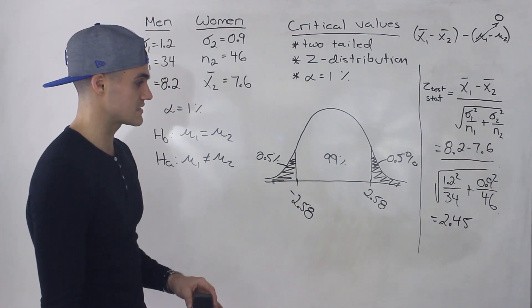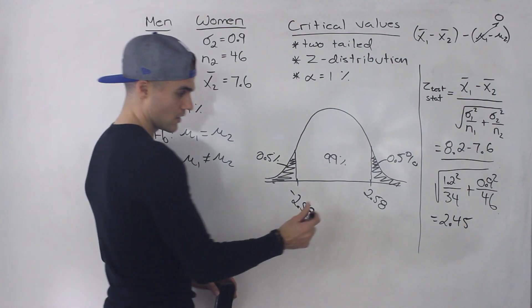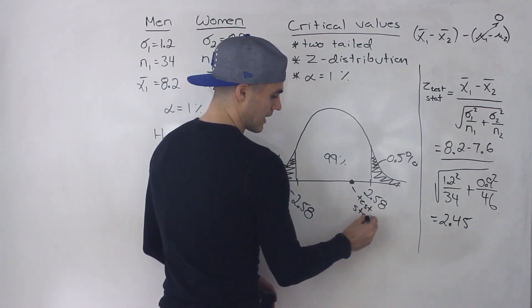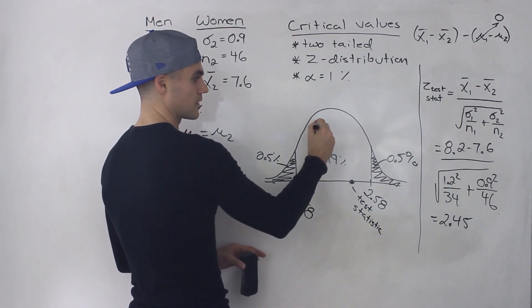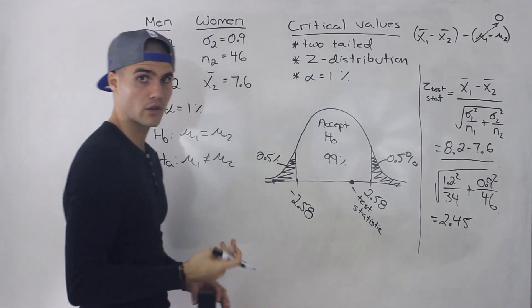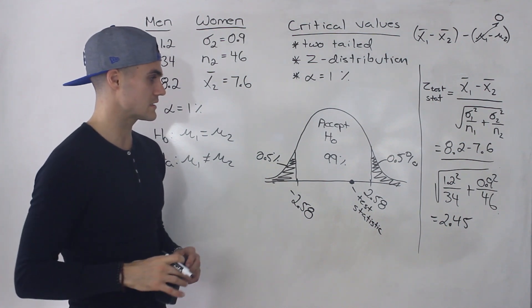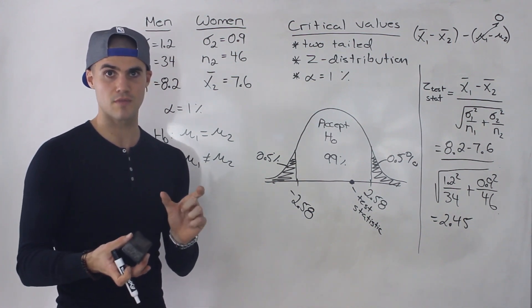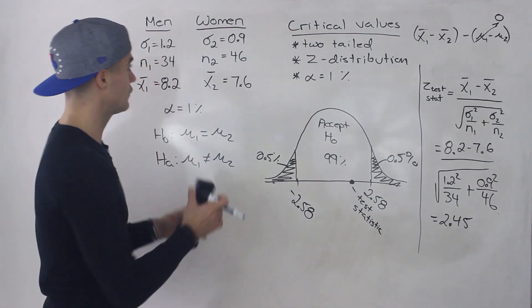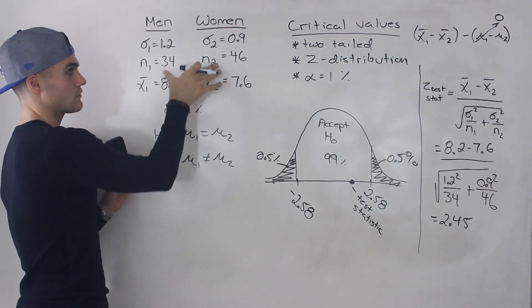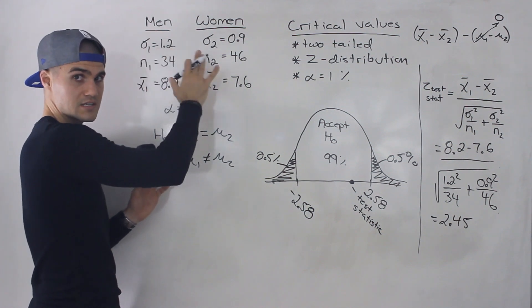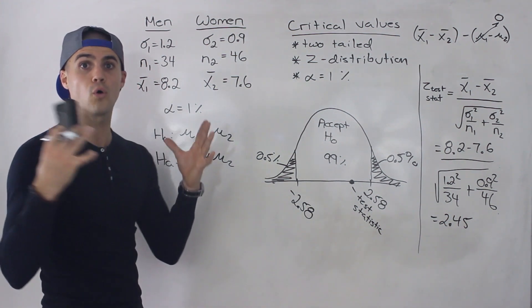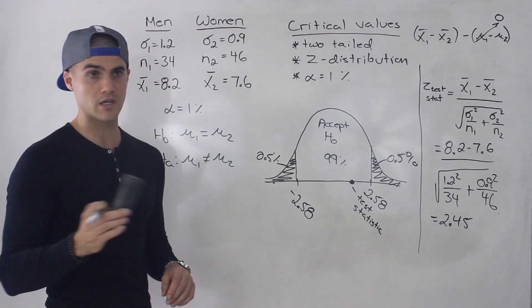Z = 2.45 falls in the acceptance region on the diagram — between the critical values of ±2.58. So we continue to accept the null hypothesis. The concluding statement is that there is not enough evidence to show that there are differences in the hours of sleep that men versus women get in this city. Even though there were differences in the sample, the evidence is not sufficient to conclude differences for the whole population.